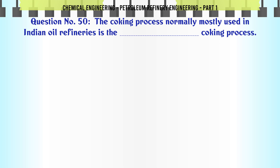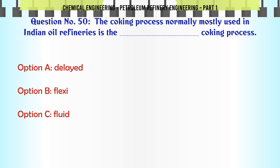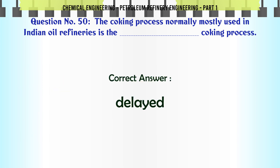The coking process normally mostly used in Indian oil refineries is the: A. Delayed coking, B. Flexi coking, C. Fluid coking, D. Contact coking. The correct answer is Delayed coking.